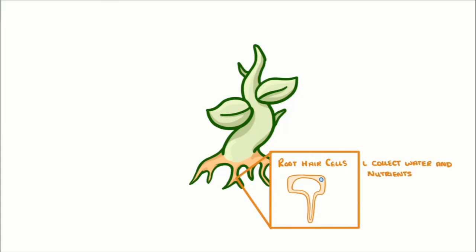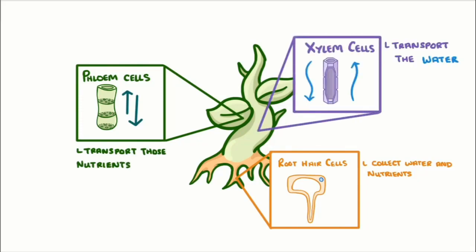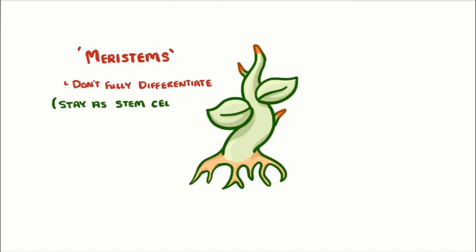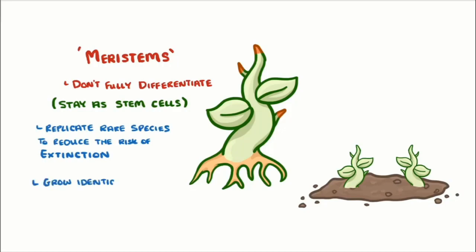Plants have phloem cells to transport nutrients and xylem cells to transport water. However, the parts of a plant where growth occurs — called the meristems — never fully differentiate and so stay as stem cells throughout the plant's life. This means we can take a small cutting from a plant and use it to grow clones quickly and cheaply, replicate rare species to reduce their risk of extinction, and grow identical crop plants with desirable characteristics such as large fruits.